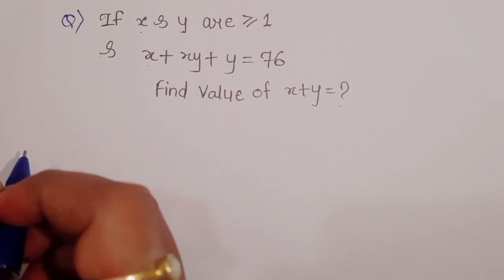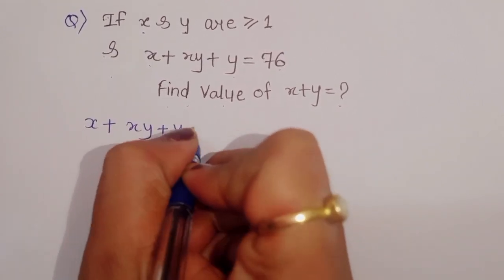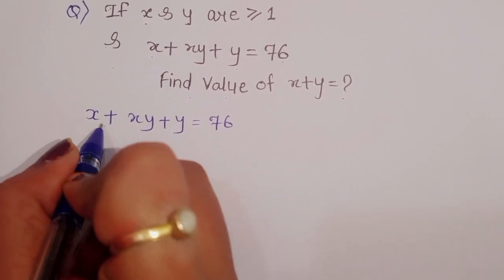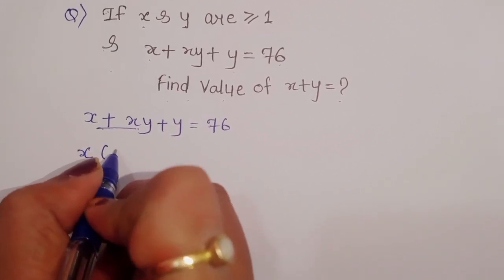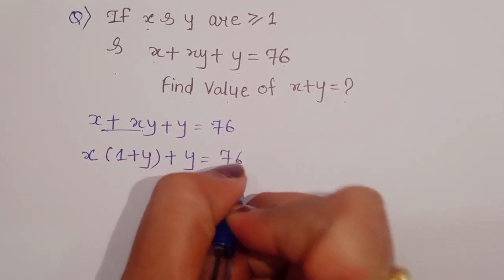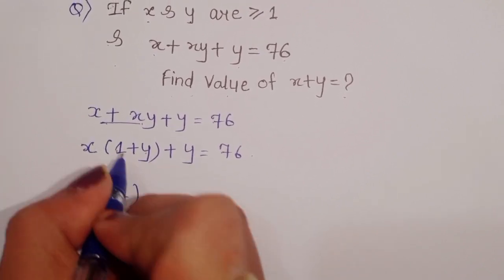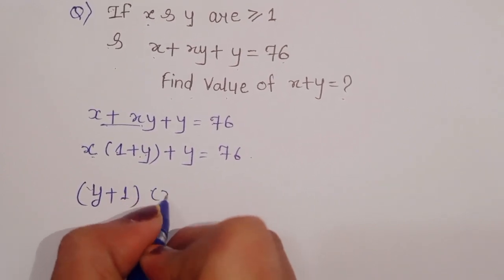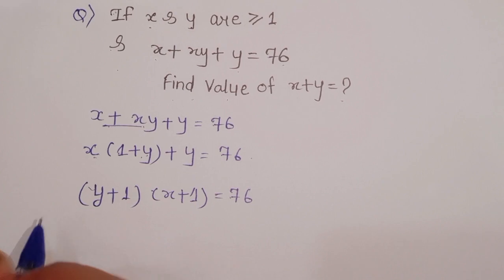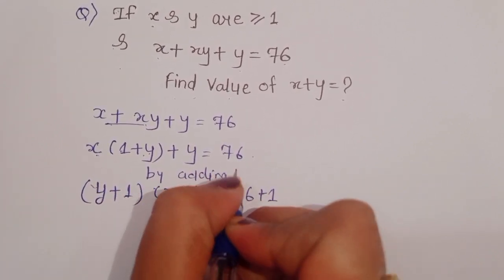Let's see the solution. What is given: x plus xy plus y is equal to 76. We can take x as a common factor, giving x times (1 plus y), plus y equals 76. We can then write this as x(y plus 1) plus (y plus 1), which becomes (x plus 1)(y plus 1).